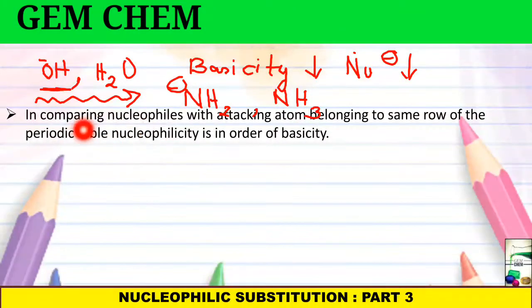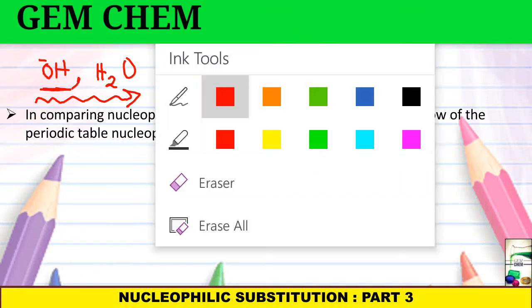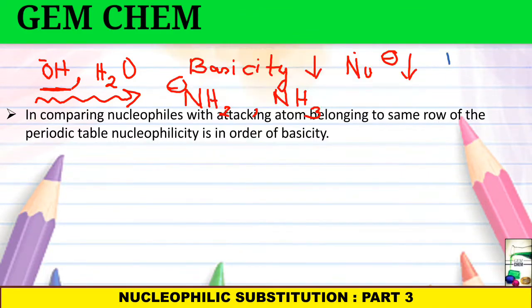In comparing the nucleophiles with attacking atom belonging to the same row of the periodic table, nucleophilicity is in order of the basicity. That is, if nucleophilicity is increasing, basicity will also increase. If you consider, suppose, this example, that is, R3C-, R2N-, RO-, and F-. Here the nucleophilicity is decreasing in this way. Also, the basicity is decreasing in this way. As a result, here the nucleophilicity is in order with the basicity.